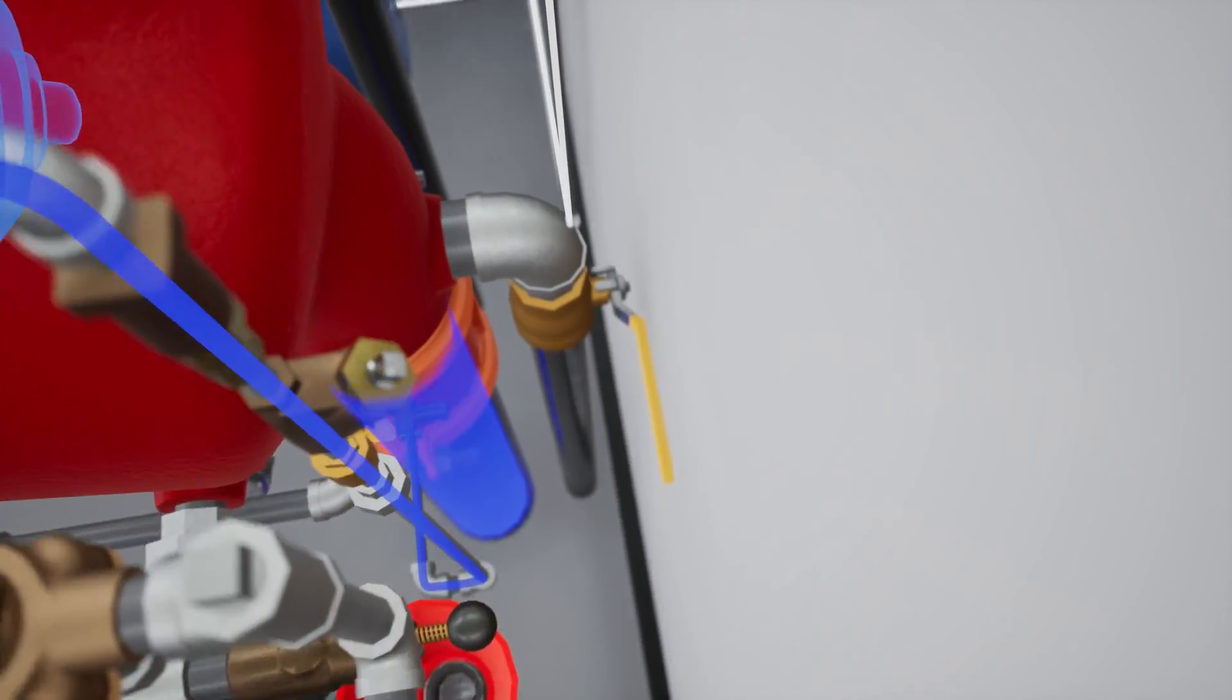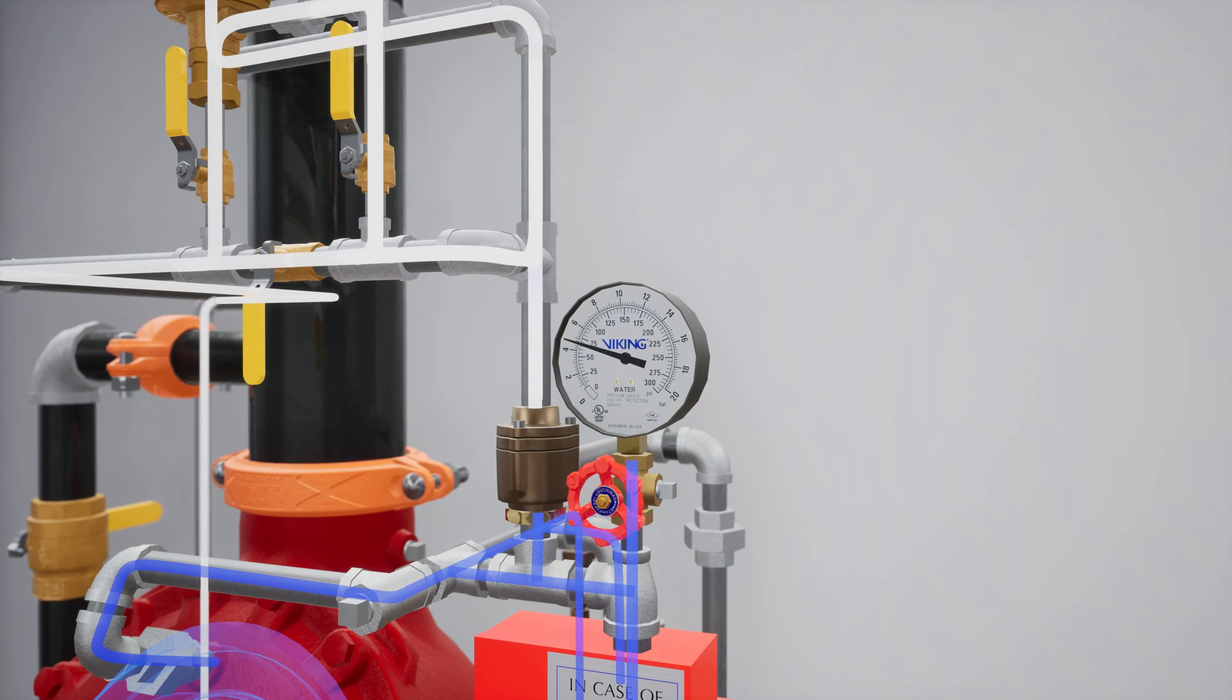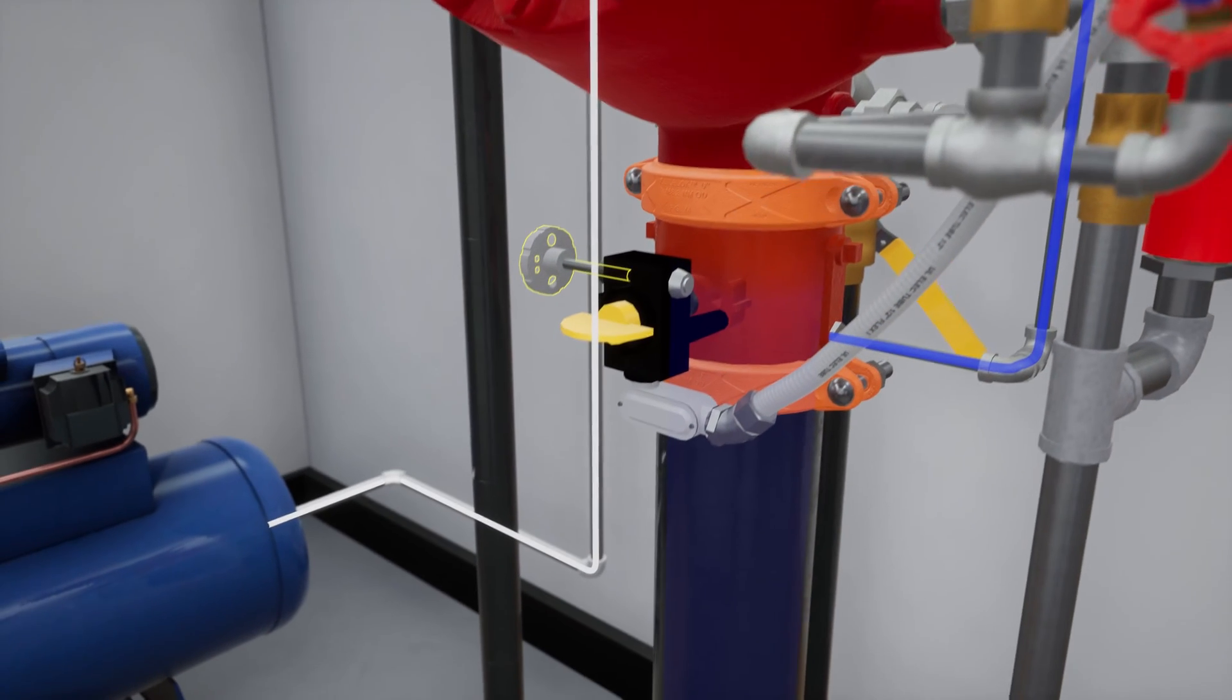Next, partially open the flow test valve. Once water pressure has been established in the prime chamber, slightly open the water supply control valve and begin introducing water into the system.